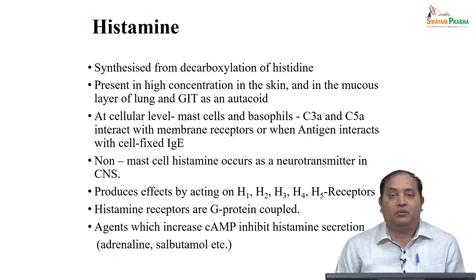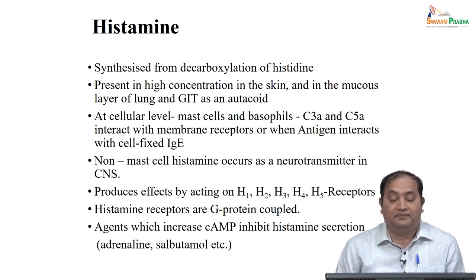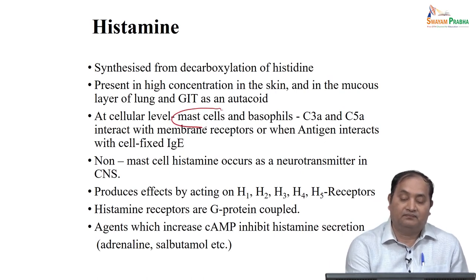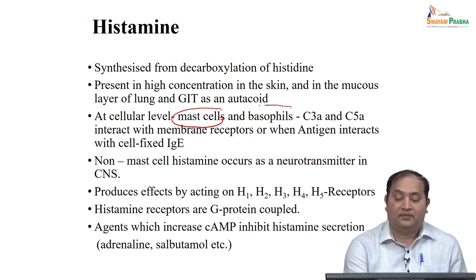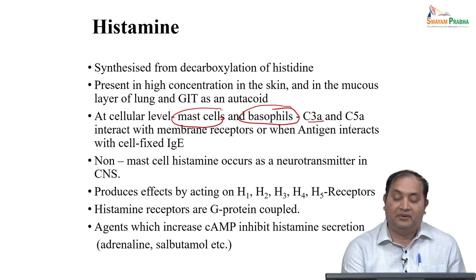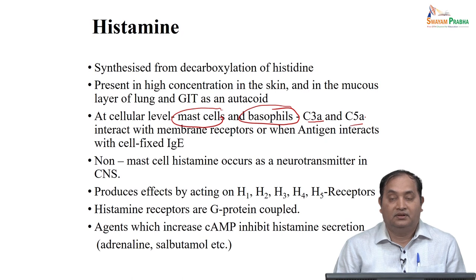Let us discuss the most commonly released autocoid — histamine. Histamine is synthesized by the process called decarboxylation from histidine, and it is present in high concentration in the skin, mucous membrane, lungs, and GIT as an autocoid. At the cellular level, it mostly remains in mast cells or blood cells like basophils. When there is an immunologically mediated action, like C3A and C5A activated, it interacts with membrane receptors, and following antigenic exposure through IgE, an excessive amount of histamine is released.